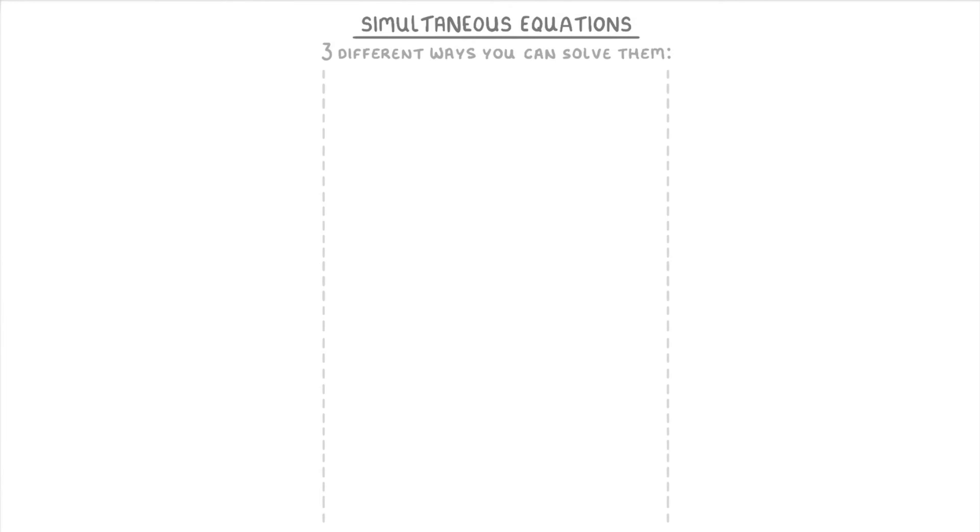Now when it comes to simultaneous equations in exams, there's three different ways that you can solve them. One is to plot both of the equations on a graph like we did a minute ago and then find the point where they cross, which will be the solution. The other two methods are called substitution and elimination.